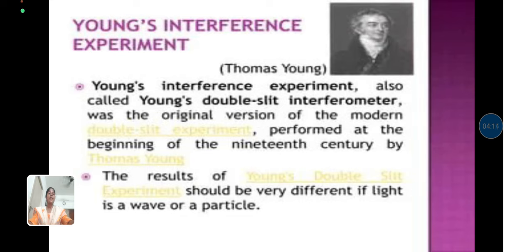Next we are going to see Young's interference experiment. Young's interference experiment, also called Young's double slit interferometer. As early as in 1665, Grimaldi attempted to produce the interference between two beams of light. He directed sunlight into a dark room through two pinholes in a screen with an expectation that bright and dark bands would be observed in the area where the beams overlap on each other. He also observed uniform illumination instead.